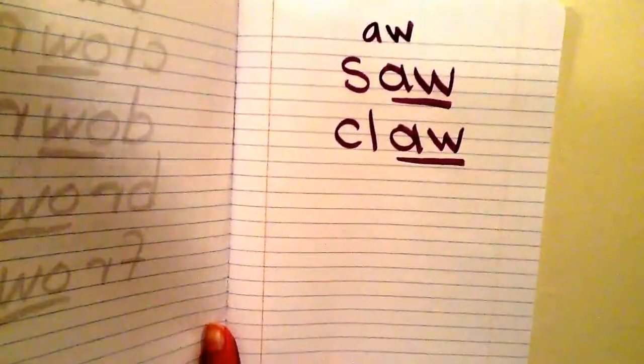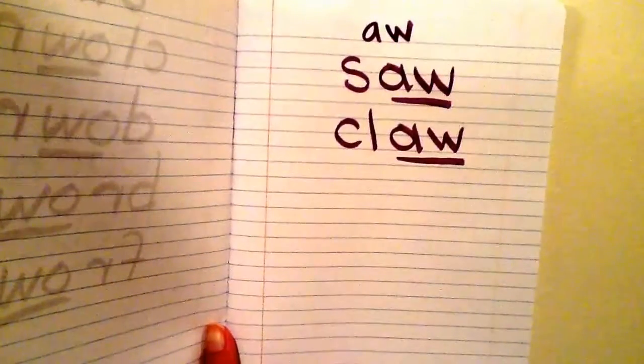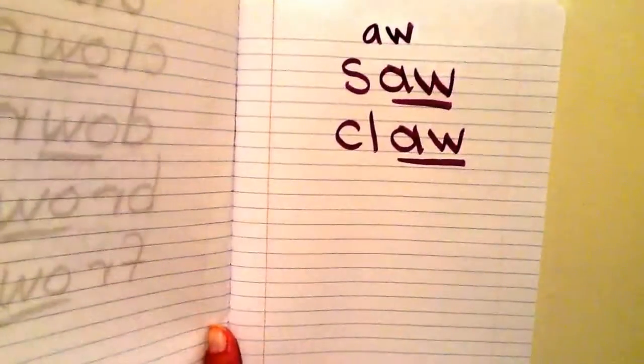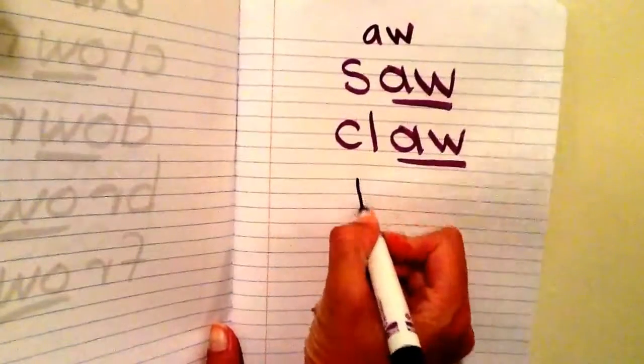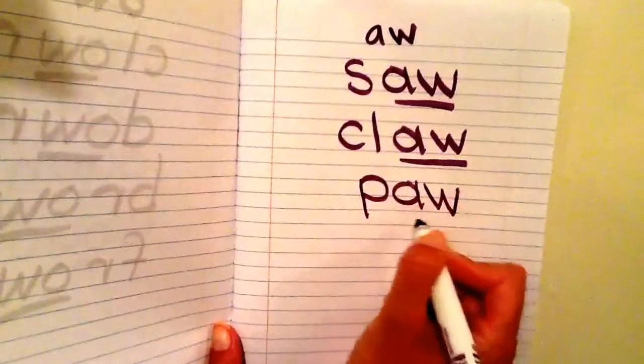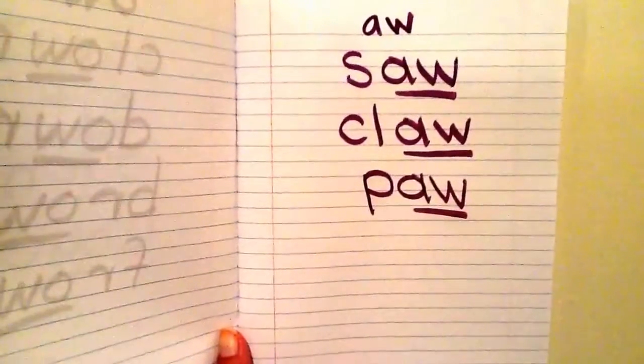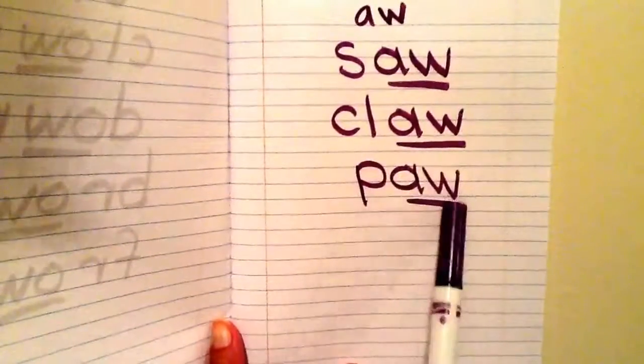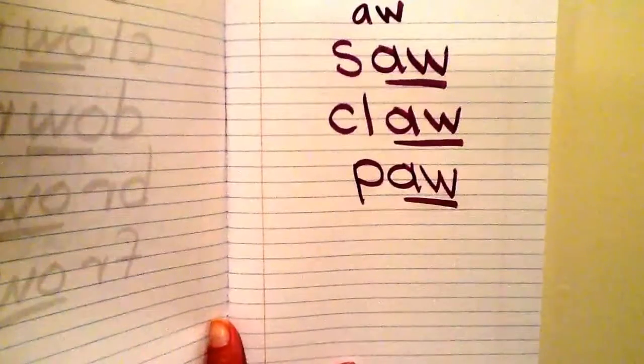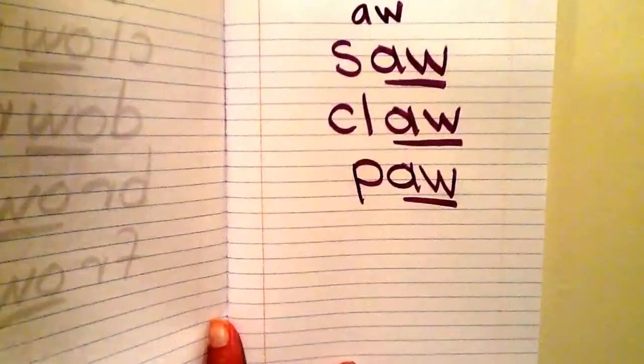Another word that has AW as A-W is the word paw. So when I say that slowly, I hear P and then AW, A-W. And I'm going to underline A-W, paw. So please write that in your word study notebook: P-A-W, paw. And underline A-W, please.